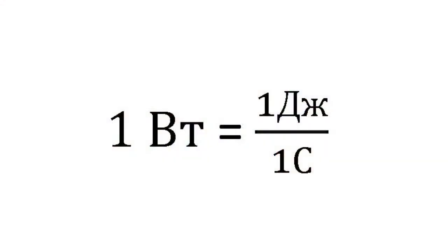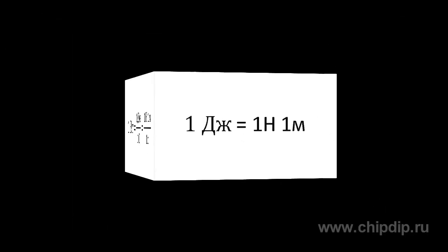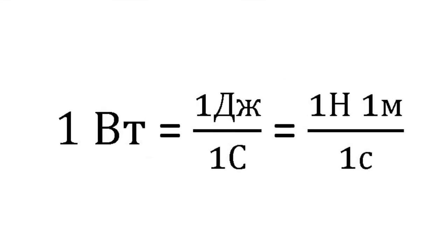In turn, the joule can be expressed as the product of a newton and a meter, since it is the work done for moving the point of application of a one-newton force by one meter. Accordingly, one watt equals one newton multiplied by one meter, divided by one second.